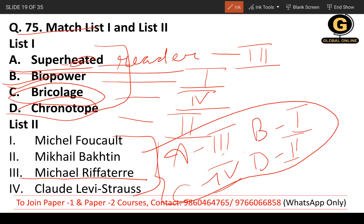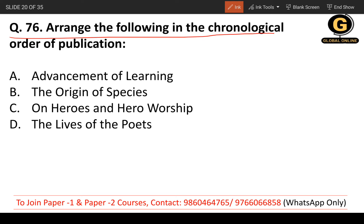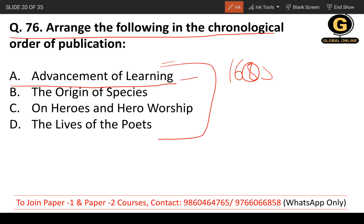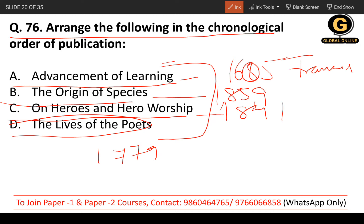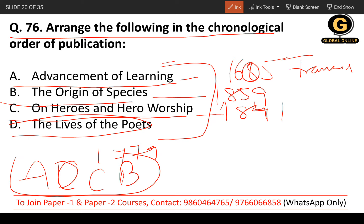Question 76: Arrange the following in the chronological order of publication. 'Advancement of Learning' by Francis Bacon was published in 1605. 'Origin of Species' by Charles Darwin was published in 1859. 'On Heroes and Hero-Worship' by Thomas Carlyle was published in 1841. 'Lives of the Poets' by Samuel Johnson was published in 1779. The correct chronological order is A, D, C, B.